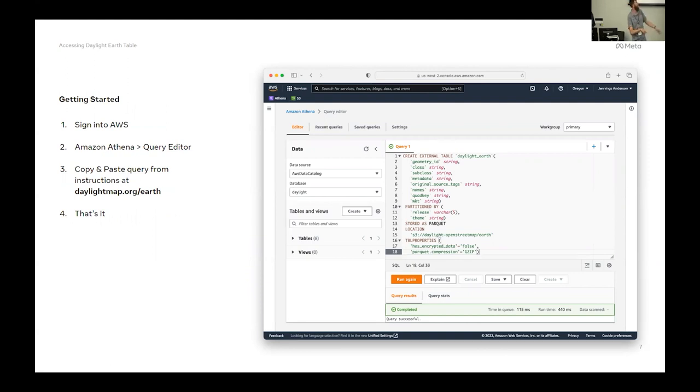This is all it takes to get started. So you do need an AWS account to access these files, the parquet files that are on S3. But you go to the query editor, copy and paste this query from the website, and click run, and that's it.